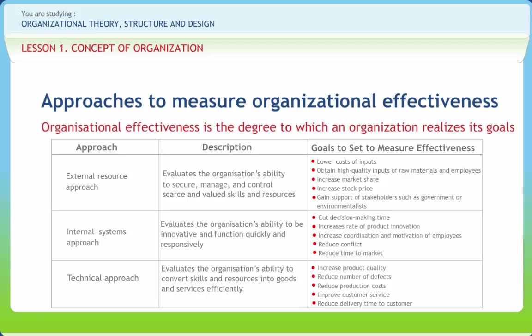Under the internal systems approach, effectiveness is measured as internal organizational health and efficiency. An effective organization has a smooth, well-oiled internal process — employees are happy and satisfied, and departments cooperate with one another to ensure high productivity. This approach allows managers to evaluate how effectively an organization functions and operates. Under the technical approach, effectiveness is measured in terms of productivity and efficiency, where productivity measures are objective measures of the effectiveness of an organization's production operation.